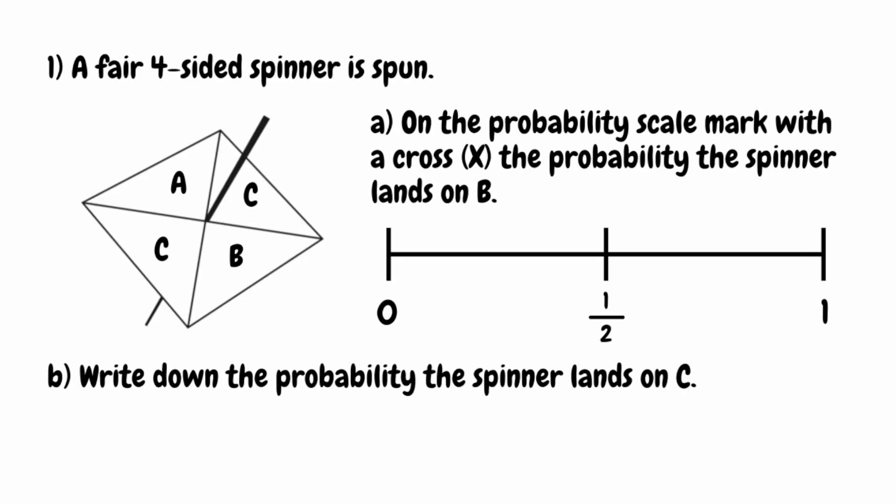For this first question, a fair four-sided spinner is spun. For part A, we want to mark with a cross on the probability scale the probability that the spinner lands on B. Since it's a fair spinner, all outcomes have equal probability. We express this as a fraction: number of successful outcomes over total outcomes. There's only one B on the spinner, and it's a four-sided spinner, so the probability is one quarter. A quarter sits right in the middle between zero and one half, so we mark the X there.